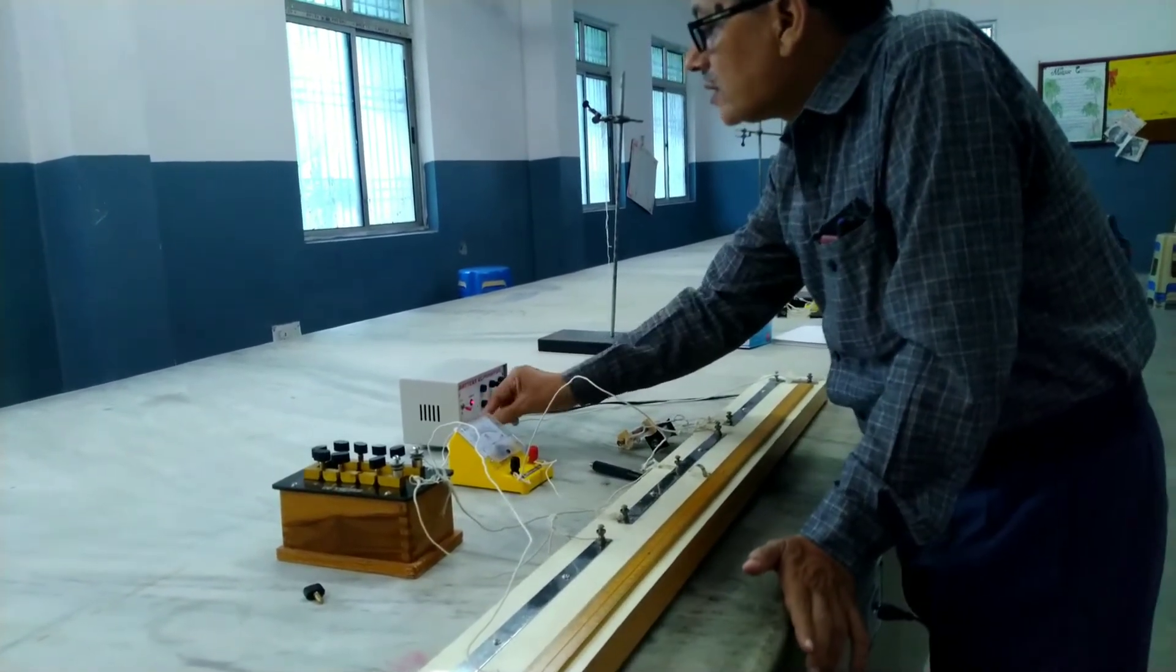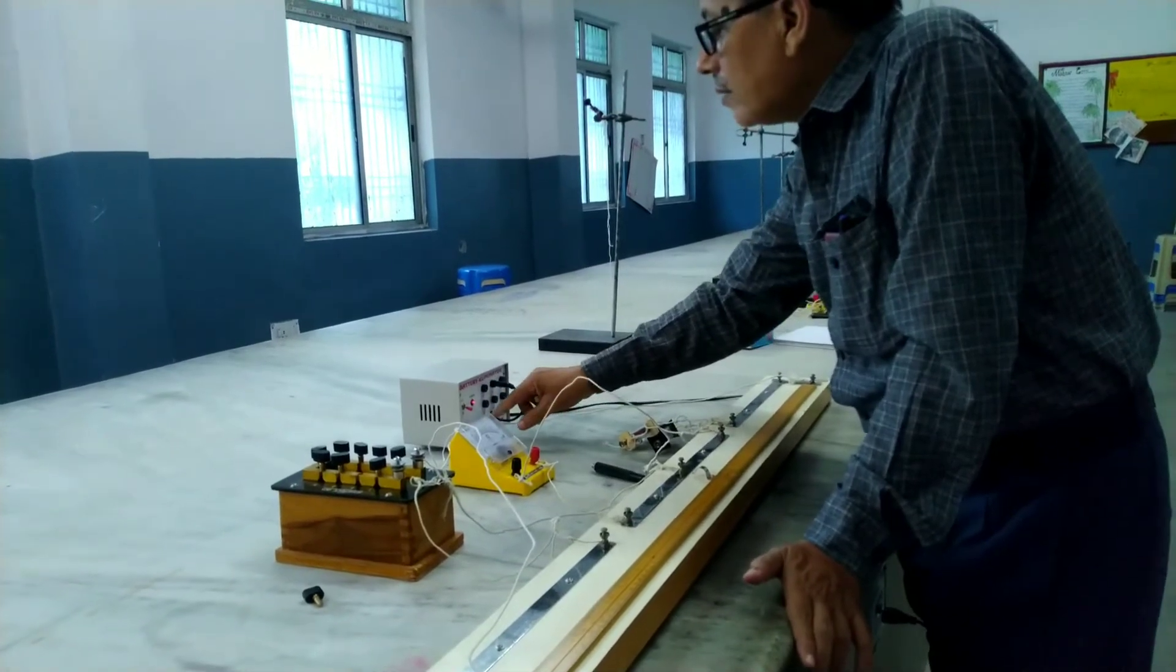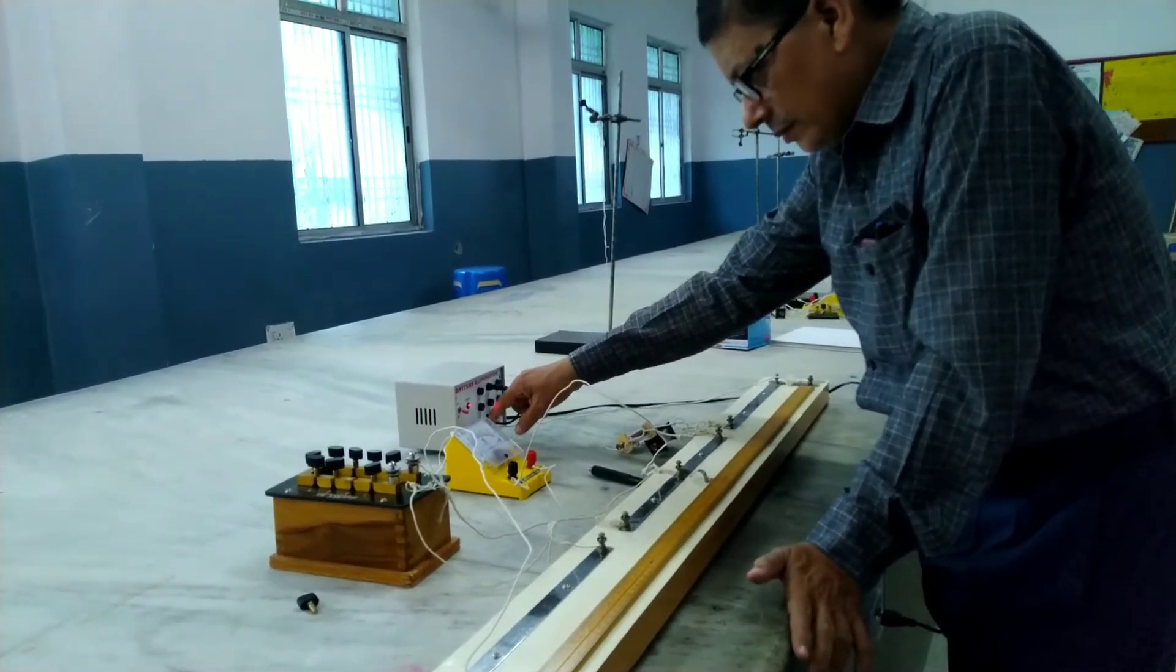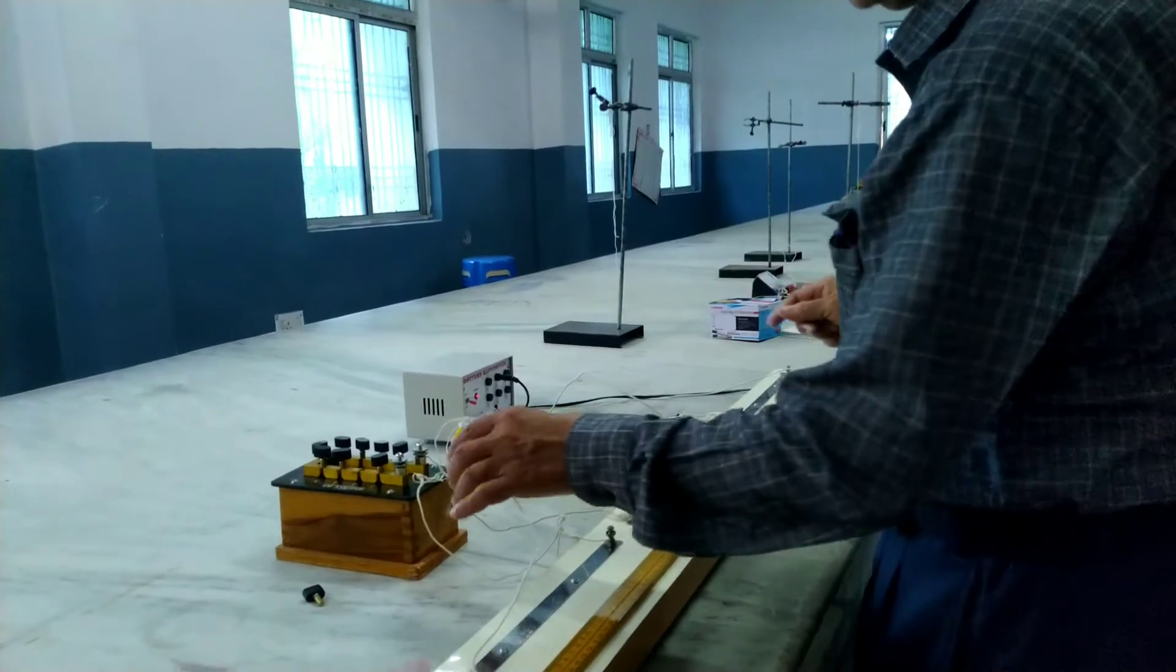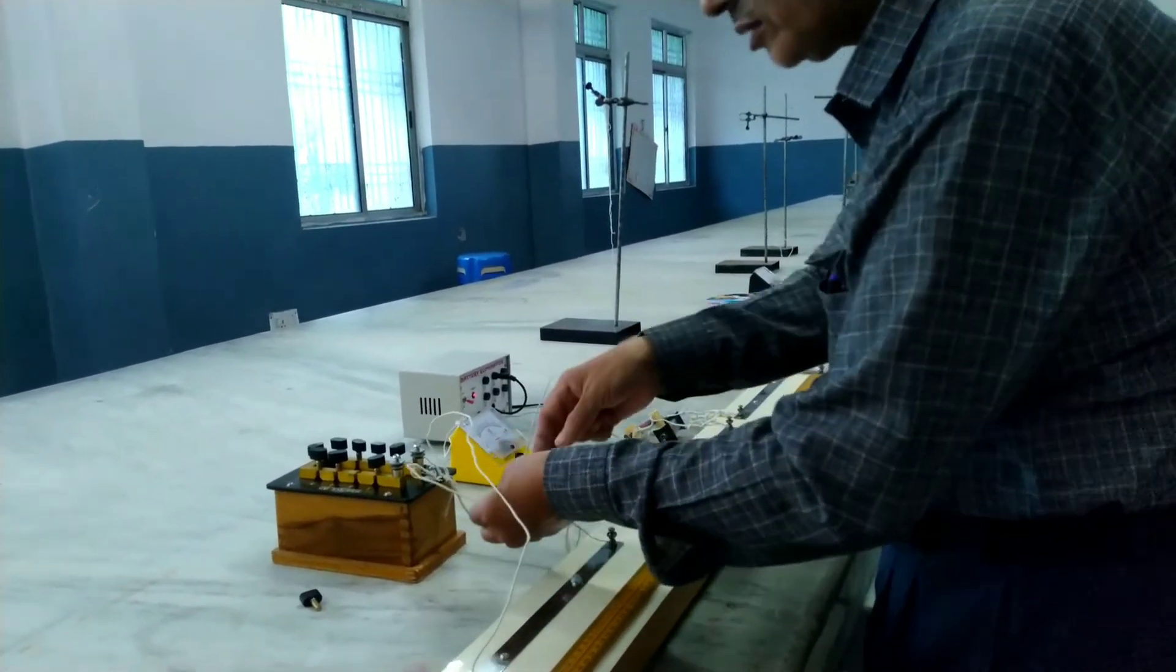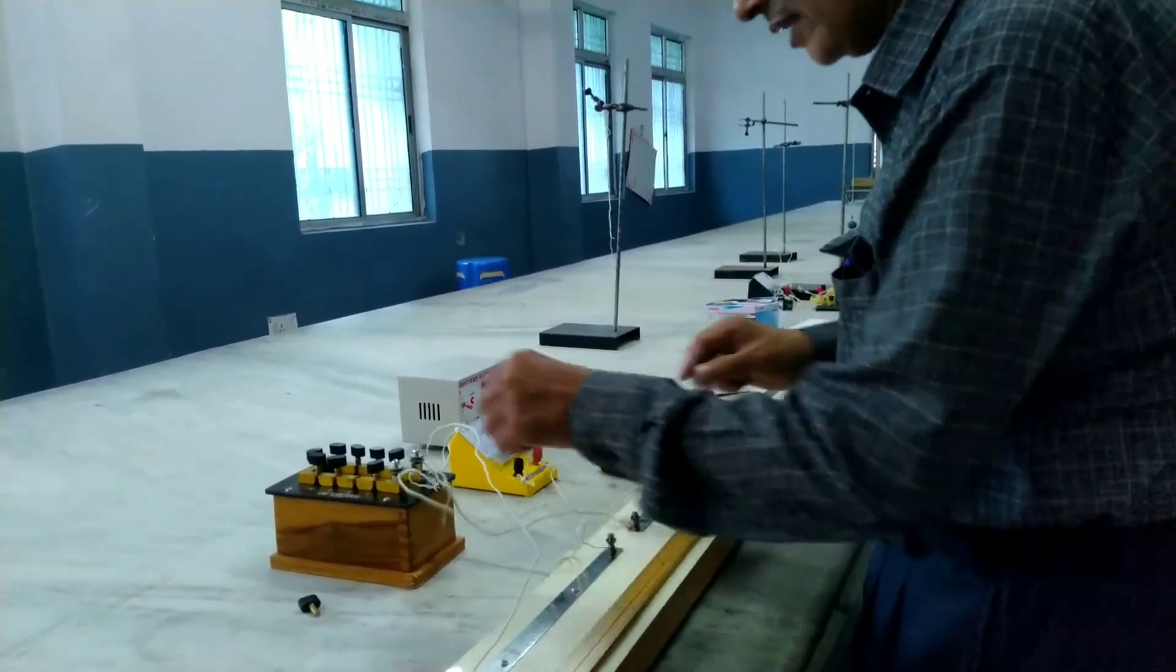Red is for the positive terminal and black for negative terminal. This resistance box is placed in this gap, that is known resistance.